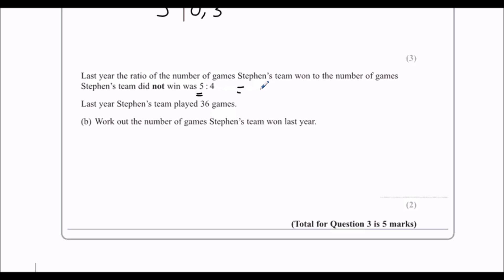So five plus four is nine. So we've got nine parts. Thirty-six divided by nine is four. So each part, each part is worth four.